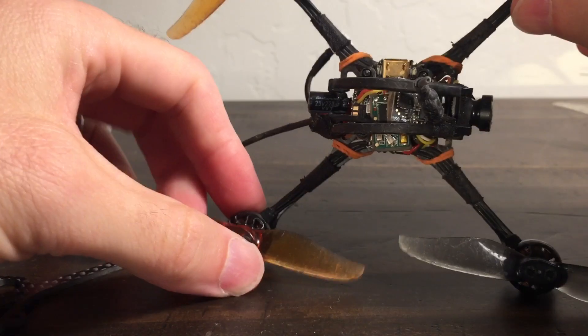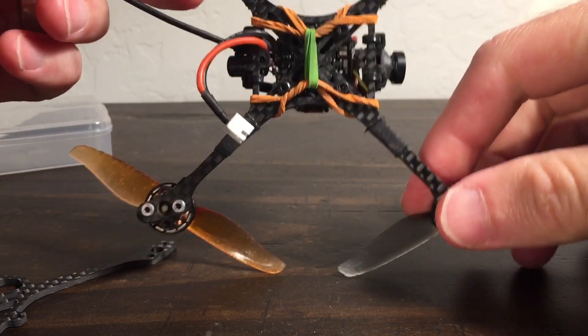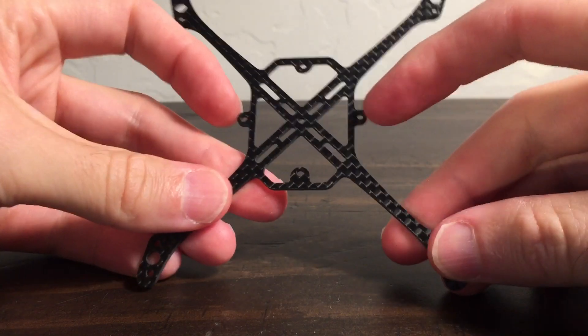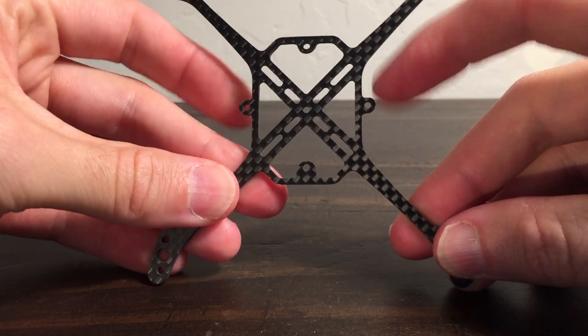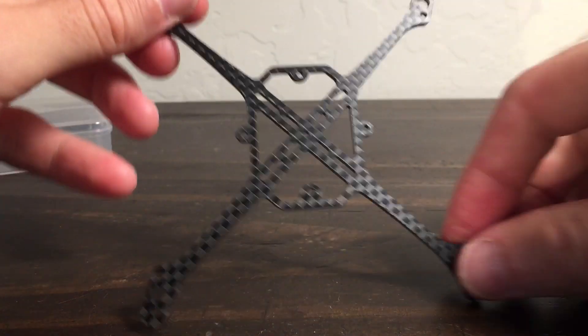Also, they give you an option too, so if you build this up with a 16 by 16 stack, then what you can do is if you want to keep it nice and sleek, you can cut the little ears off, grind them off, or do whatever you want to do.